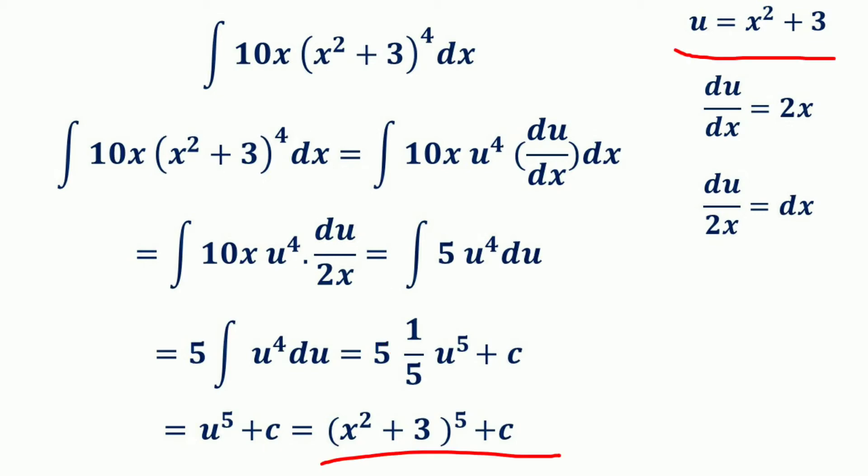Substituting u = x² + 3 back in, the result becomes (x² + 3)⁵ + c. You can verify the answer by differentiating using the generalized power function rule or chain rule, and you will get the original function 10x · (x² + 3)⁴.